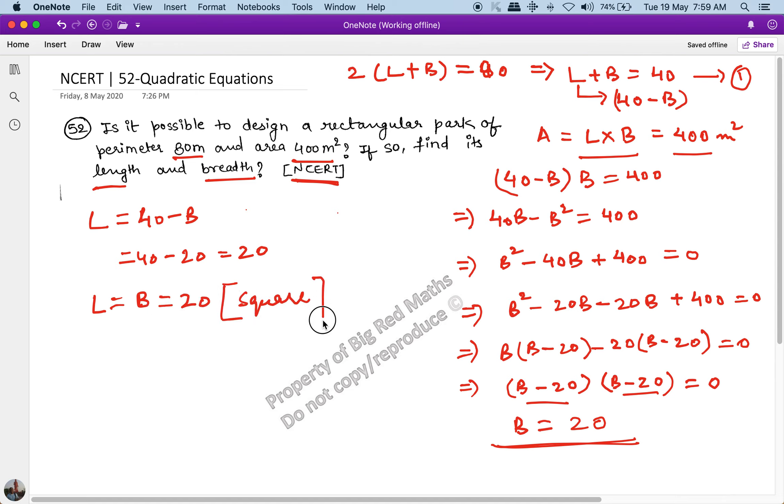The question asks, is it possible to design a rectangular park of perimeter 80 and area 400? The answer is yes, it is possible. The length and breadth are both equal to 20 meter.